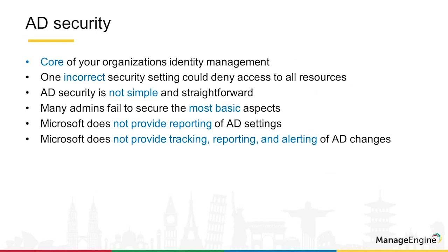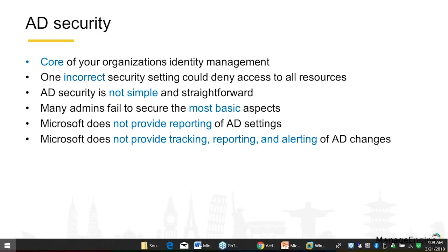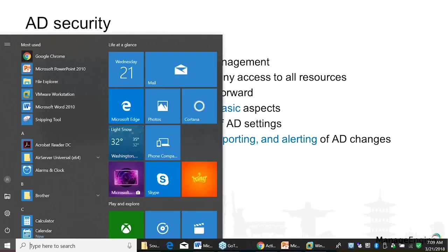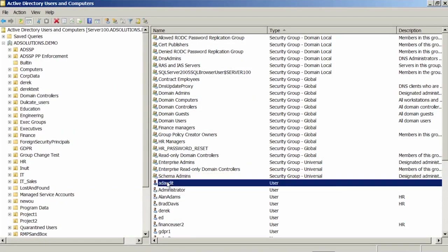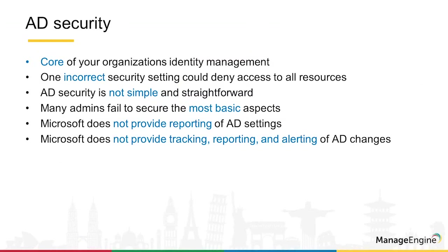Even 18 years after Active Directory's release, many administrators and organizations still don't deal with the basics. When we start talking about password policy and it isn't handled correctly, that's a basic that was around in Windows NT. Another critical roadblock is reporting — in a live Active Directory environment, there are no built-in reporting capabilities. You can't right-click and get a report, so this forces us into another avenue to get information out of Active Directory.